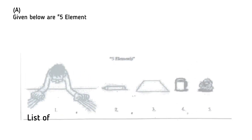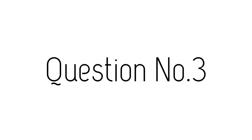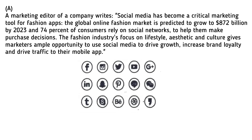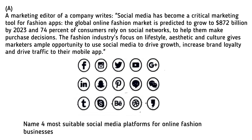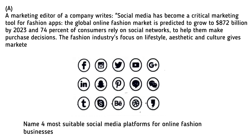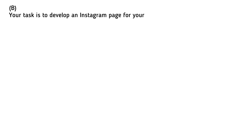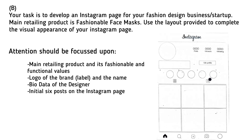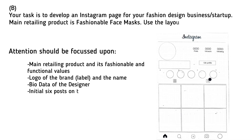The third question typically revolves around fashion-related topics such as designing a fashion brand or creating clothing for a specific context. In the 2021 paper, questions were concentrated on a fashion brand. The first sub-question asked students to identify the most suitable social media platforms for marketing fashion and lifestyle products and list three platforms. The second sub-question involved developing an Instagram page for a fashion design startup with fashionable masks as the primary product — completing the Instagram layout, creating a logo and brand name, filling the designer's bio, and creating six posts.